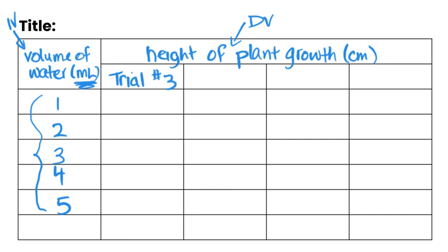And then for a good experiment, we always want to collect data for at least three trials. So let's just erase that. We got trial number one, trial number two, and trial number three.